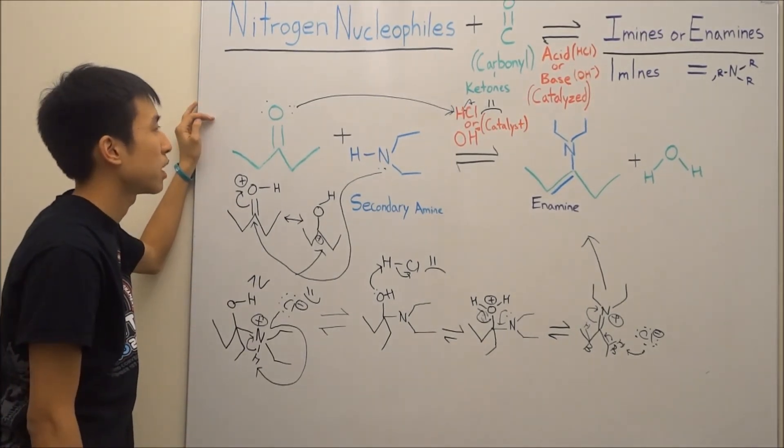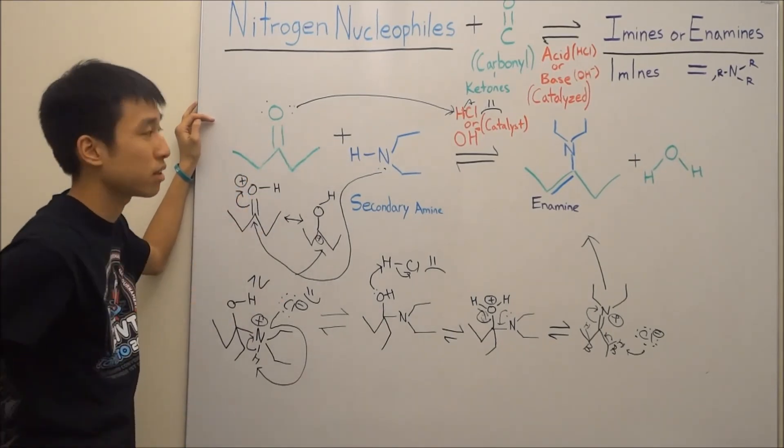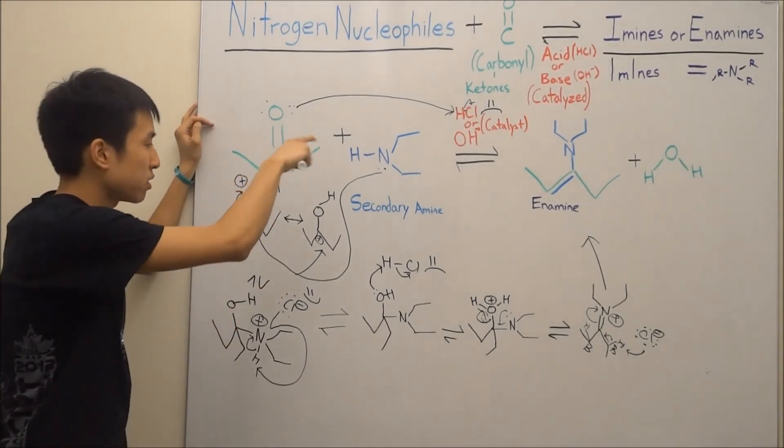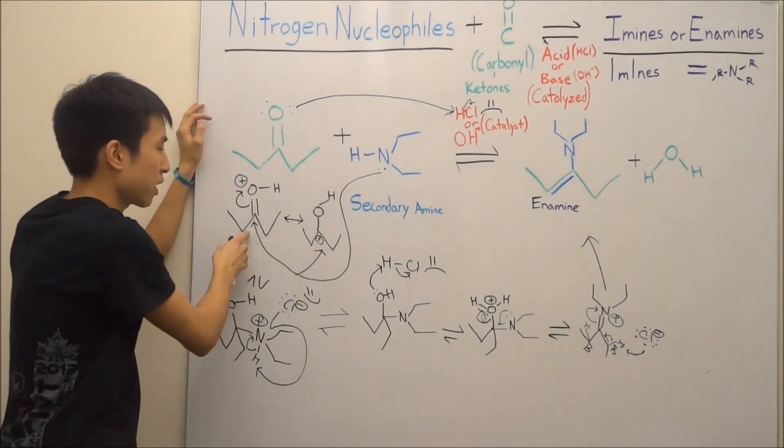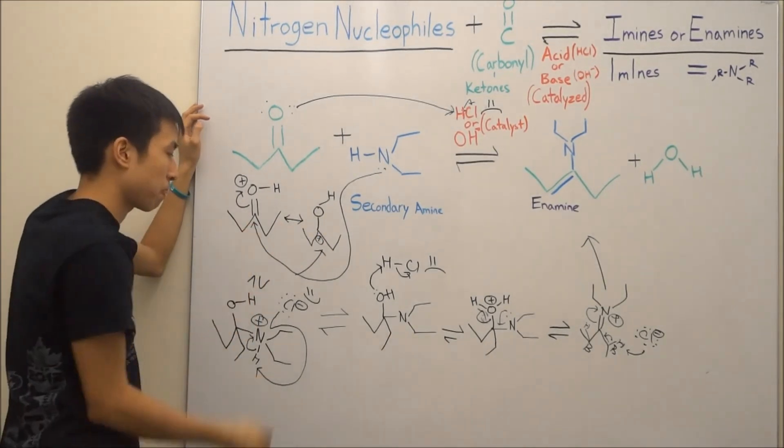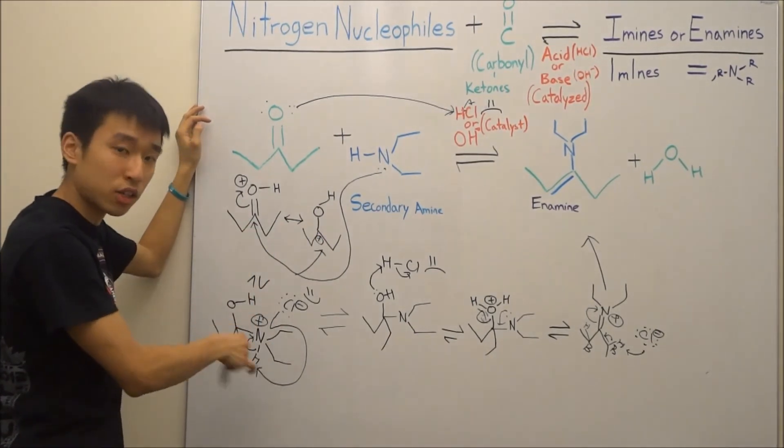So basically, you have to destabilize your carbonyl, as always. Once he gets the positive charge, the secondary amine takes advantage of this opportunity to attack. He attacks the vulnerable, secretly positive carbon right here.